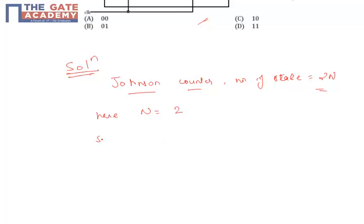So number of states are going to be equal to 2 into 2, which is equal to 4. That is, it is a mod-4 counter.